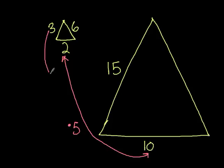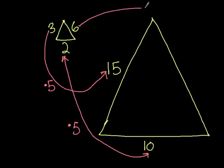And in the same way, 3 times 5 equals 15. So we know to find this other side, we're going to have to multiply 6 times 5, which equals 30.